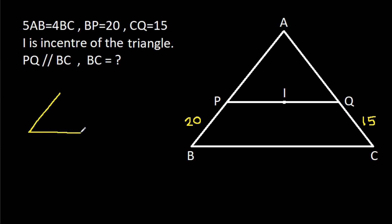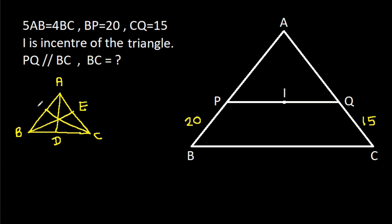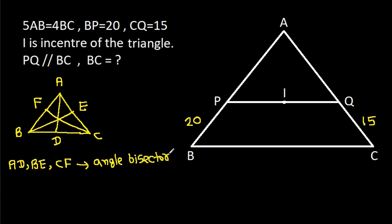So in any triangle ABC, suppose AD, BE, and CF are angle bisectors. If AD, BE, and CF are angle bisectors, then they will intersect at a single point — that is the incenter.